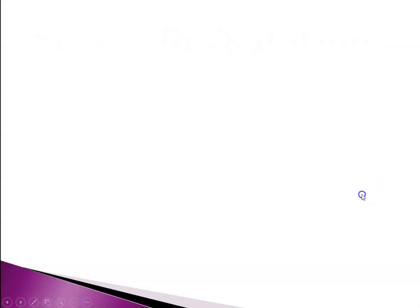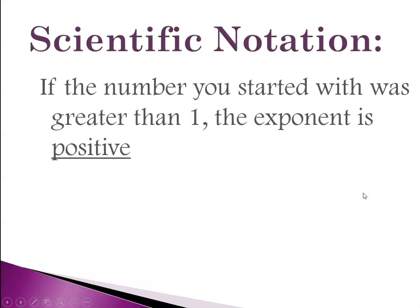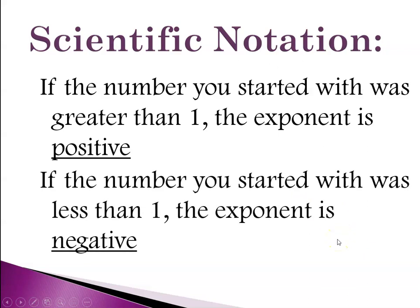And so, just to summarize, if the number you started with was greater than one, your power of ten, your exponent, is going to be a positive number. And if the number you started with was less than one, your exponent is going to be a negative number. And again, I'm going to stress that the number of significant figures in a measurement does not change when you're converting between standard and scientific notation.